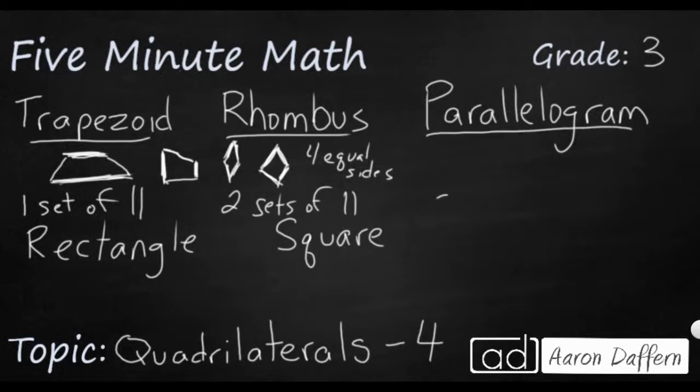Parallelogram, the only thing a parallelogram has is two sets of parallel lines, just like a rhombus. But that's all it's going to have. So typically you'll see something kind of like this. It's going to kind of look slanted like this. And so this top one is parallel to the bottom, and the two diagonals are parallel with each other.